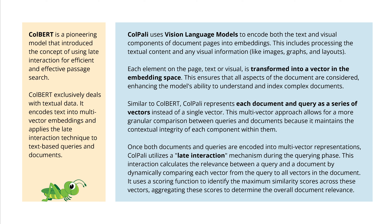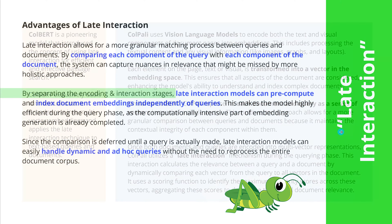This beautiful multi-vector approach allows for much more granular comparison between queries and documents. Once both documents and queries are encoded in multi-vector notation, we use late interaction during the querying phase — it calculates the relevance between the query and the document by dynamically comparing each vector from the query to all vectors in the document. You identify the maximum similarity scores, then aggregate the scores to determine overall document relevance.